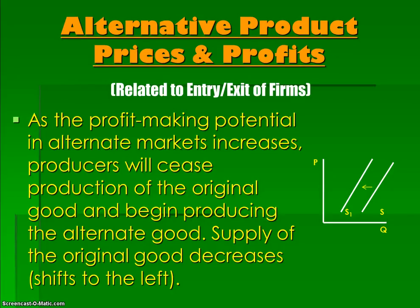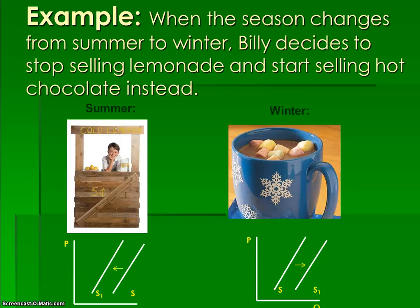The A stands for alternative product prices and profits, which is closely related to the concept of entry and exit of firms. As the profit-making potential in alternate markets increases, producers will cease production of the original good and begin producing the alternate good — so supply of the original good will decrease, and supply of the new good will shift to the right. For example, when the season changes from summer to winter, Billy decides to stop selling lemonade and start selling hot chocolate instead, decreasing the supply of lemonade and increasing the supply of hot chocolate.